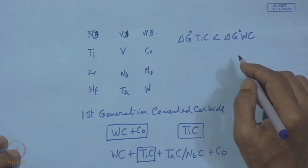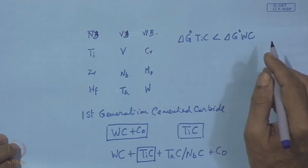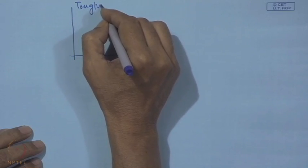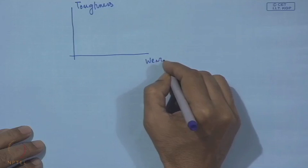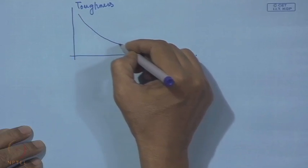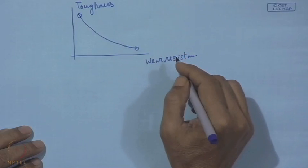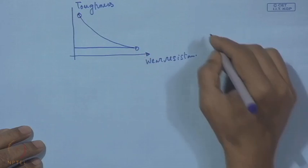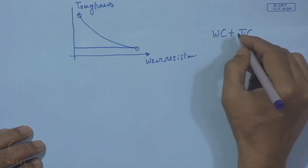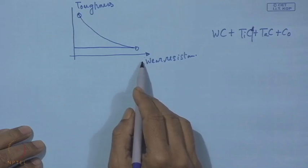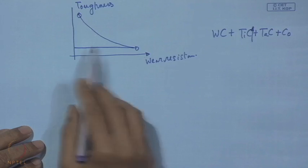This is not without any problem. When we put titanium carbide on a cutting tool, we need toughness on one side and wear resistance on the other. What happens is we get a trade-off: if we put more titanium carbide, then wear resistance keeps on increasing, but at the cost of toughness. In the WC-TiC-TaC-cobalt mixture, if we keep on adding TiC, we gain in wear resistance but sacrifice toughness.